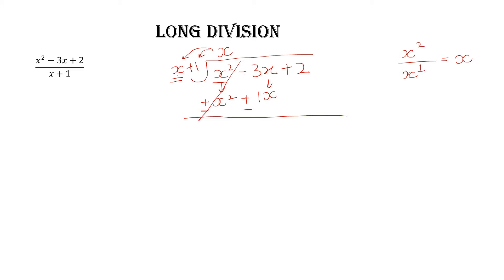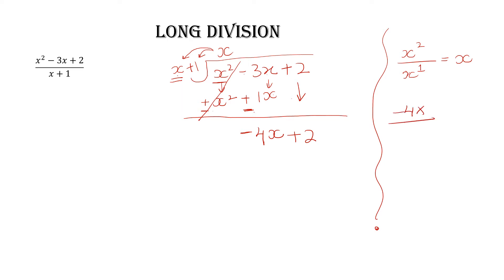You have -3x and the term below is -1x. So -3 minus 1 gives you -4x. Bring down the +2. Now go to the rough side again and divide the first term of the new dividend by the first term of the divisor. x and x cancel, so you get -4.